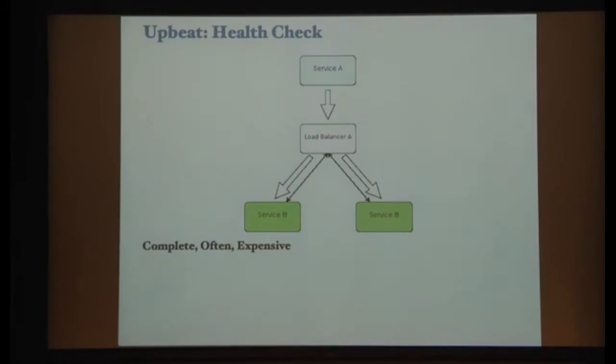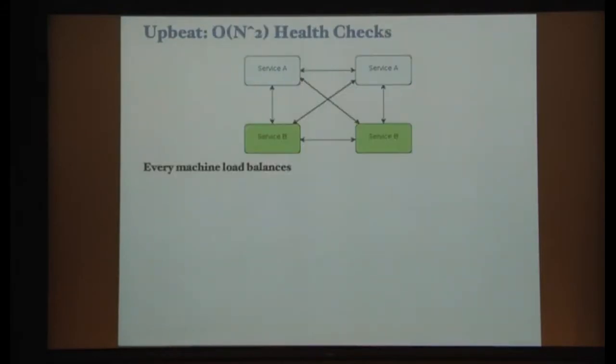So one of the problems we ran into at Factual is for the API, we use EC2. Now we have our own Colo and that's where we do a lot of our Hadoop and number crunching. But out on EC2, that's where we host our API. One of the problems with EC2 is that they don't give you low-level access to the network. So you can't play games like have two load balancers and have one take over the other immediately. So what we did was we pretty much made every machine a load balancer. Now this seems kind of crazy, especially with the number of health checks you're doing. All of a sudden you're doing N squared number of health checks and that could bring your system down.